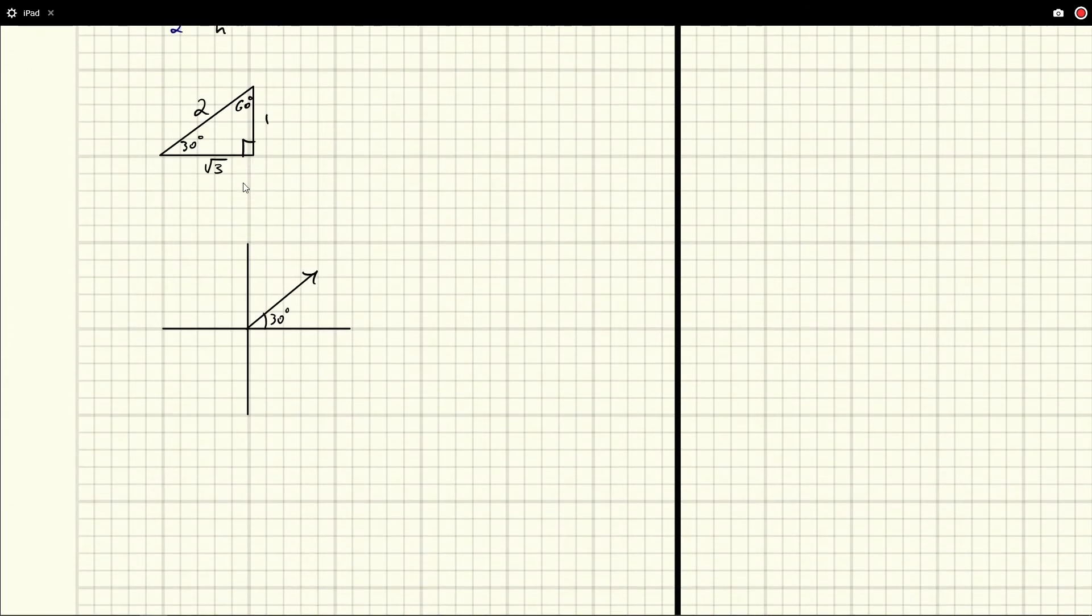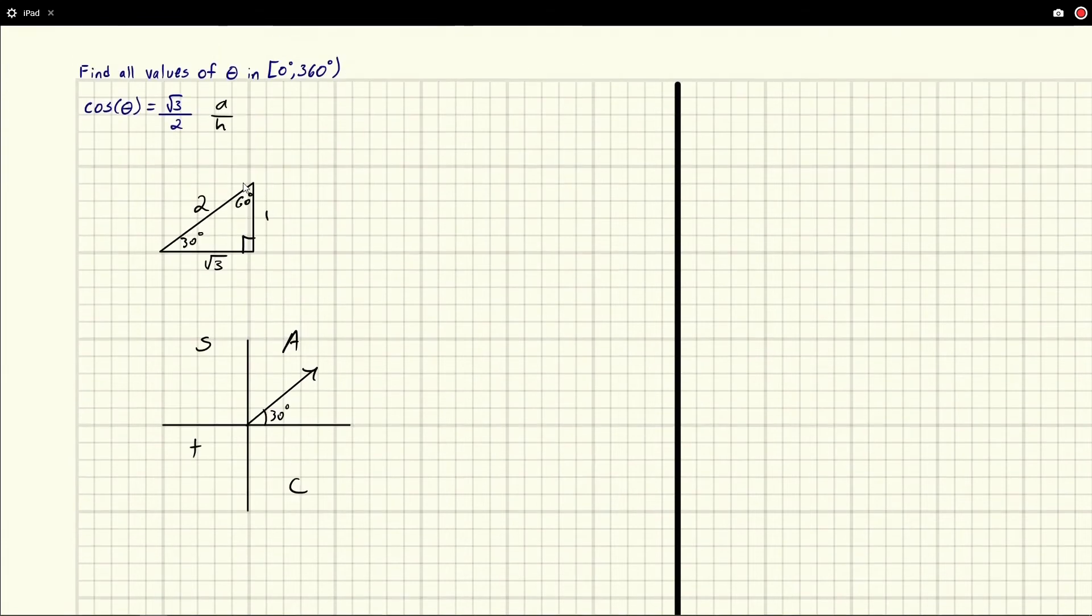So if we look at this and we say 'All Students Take Calculus,' well it turns out that it's positive in this quadrant because all the functions are positive, but also positive in the fourth quadrant, which means there's an angle somewhere in this quadrant that will give us a similar result.